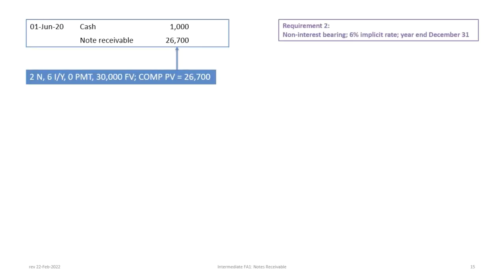The journal entry to record our non-interest-bearing note starts with the cash down payment. Compared to the previous example where the note receivable was recorded at $30,000, that's no longer the case. Because we have a long-term two-year note, we must calculate present value — the present value of its total future cash flow streams. There are two future cash flows: the principal due at maturity (in two years, a future value), and the payment amount, which in this case is zero because there are no interest payments.